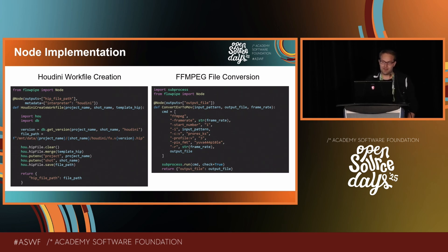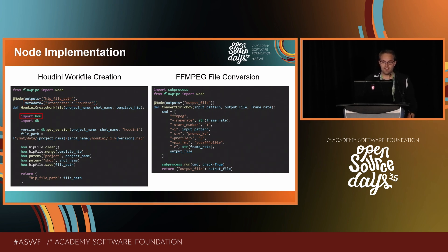These two code snippets show actual node implementations. The left example shows a node that creates a Houdini work file from a template file for a specific project and shot. The metadata defines the interpreter Houdini using the interpreter keyword, which proved to be a good concept in a multi-DCC environment — the code imports the DCC's Python modules inside the node, so the node itself can be available outside in a pure Python environment. The right example shows an EXR sequence to QuickTime movie conversion using the FFmpeg command line tool run in a Python subprocess.